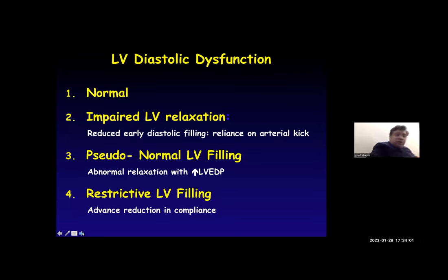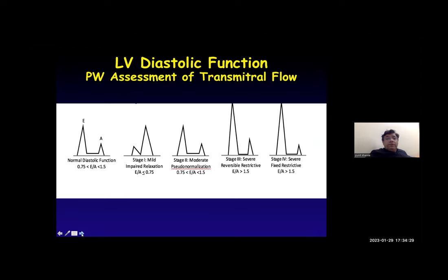Diastolic dysfunction is graded as normal, impaired relaxation, pseudo-normal, or restrictive. Impaired LV relaxation shows reduced diastolic filling. Pseudo-normal shows normal LV filling but with abnormal relaxation and increased LV end-diastolic pressure. Restrictive LV filling shows advanced reduction in compliance. Stage 1 is impaired relaxation with E/A less than or equal to 0.75. Stage 2 moderate has E/A less than 1.5. Stage 3 severe has E/A greater than 1.5 but reversible. Stage 4 is severe and fixed with E/A greater than 1.5.